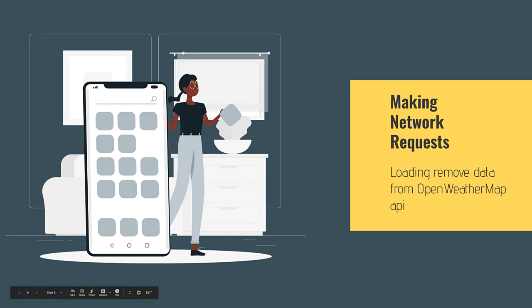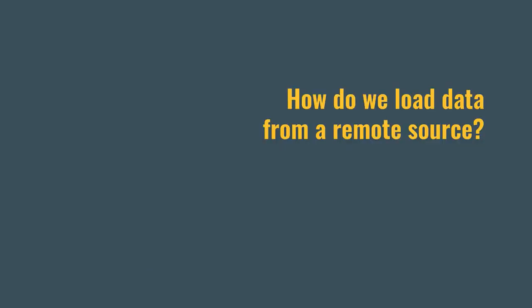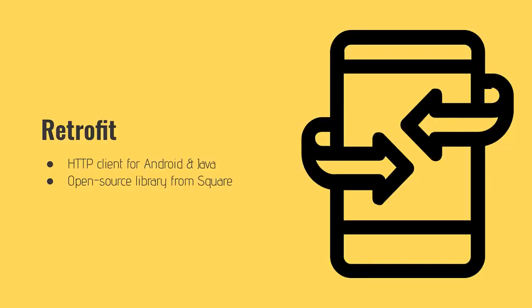That's what we'll be working on this week. The key part here — the biggest change — is learning how to make network requests from our Android app and hit a remote data source. So the key question is: how do we load data from a remote data source? And maybe before we go too much farther, what is a remote data source? To help us load this data, we're going to use a specific library that's extremely prevalent in Android — it's pretty much an industry standard. It's called Retrofit, and Retrofit is an HTTP client for Android and Java, an open source library from Square.